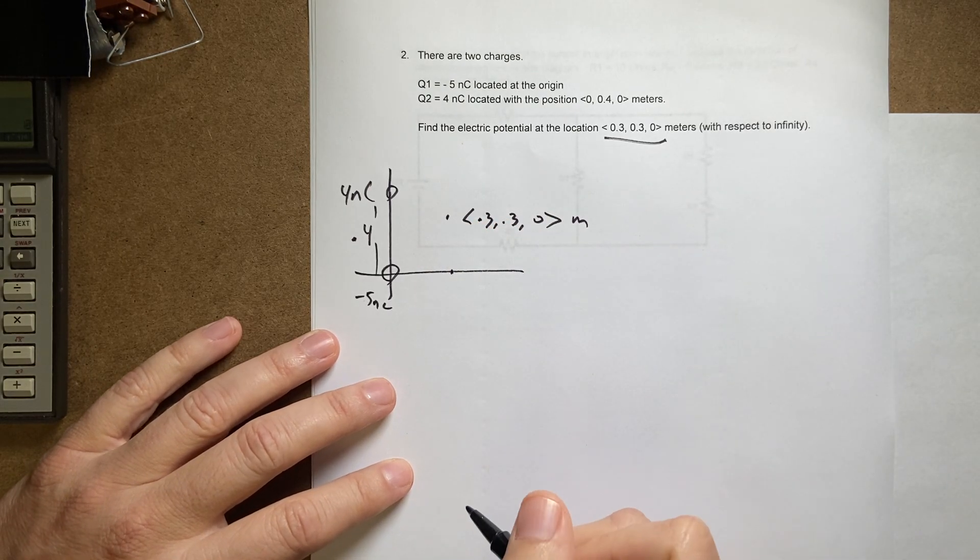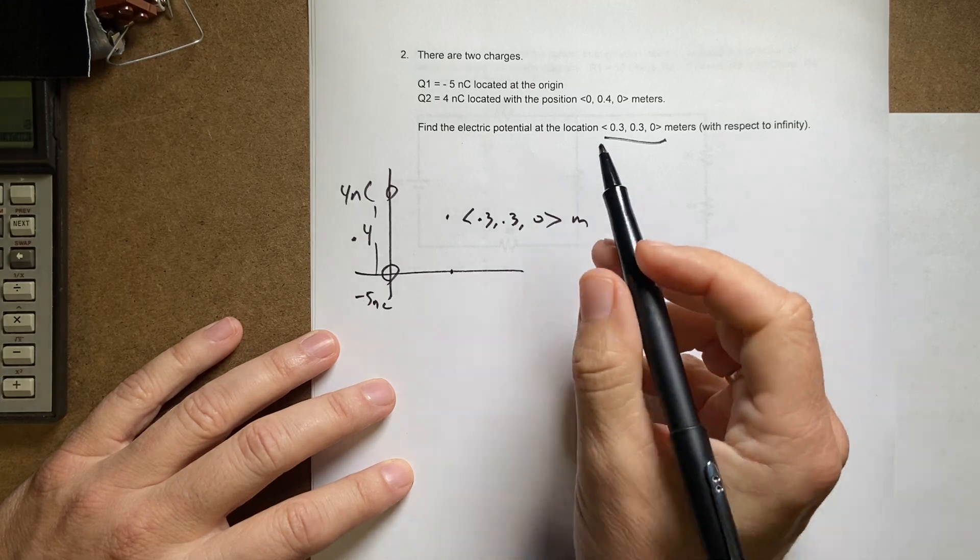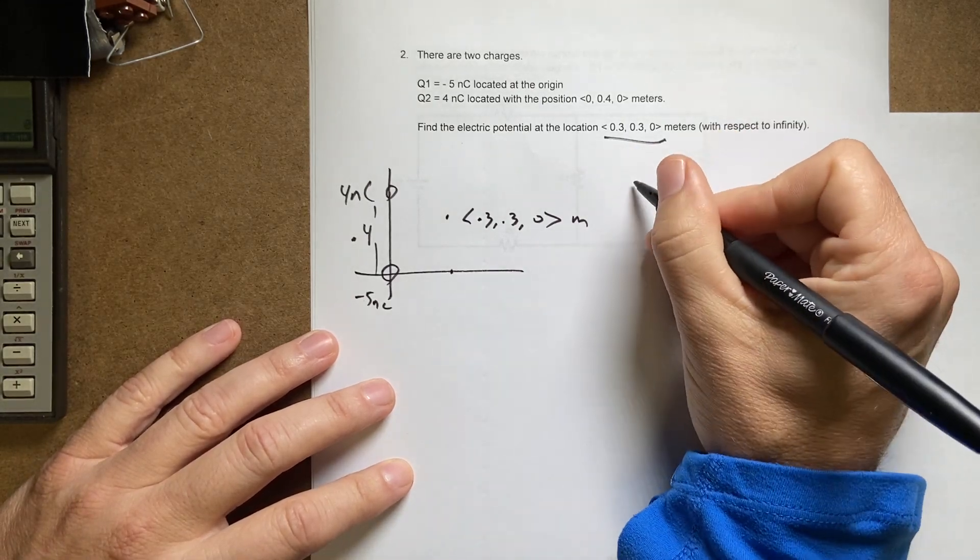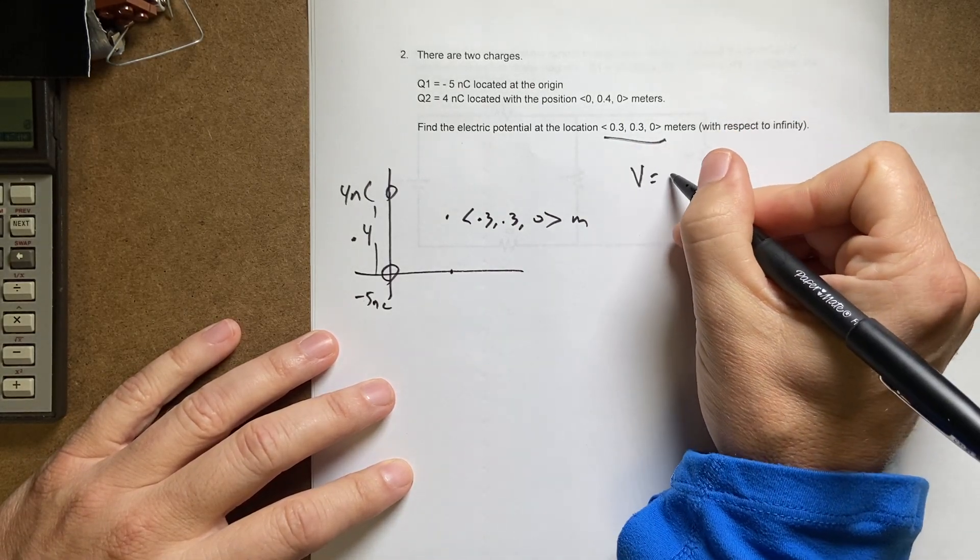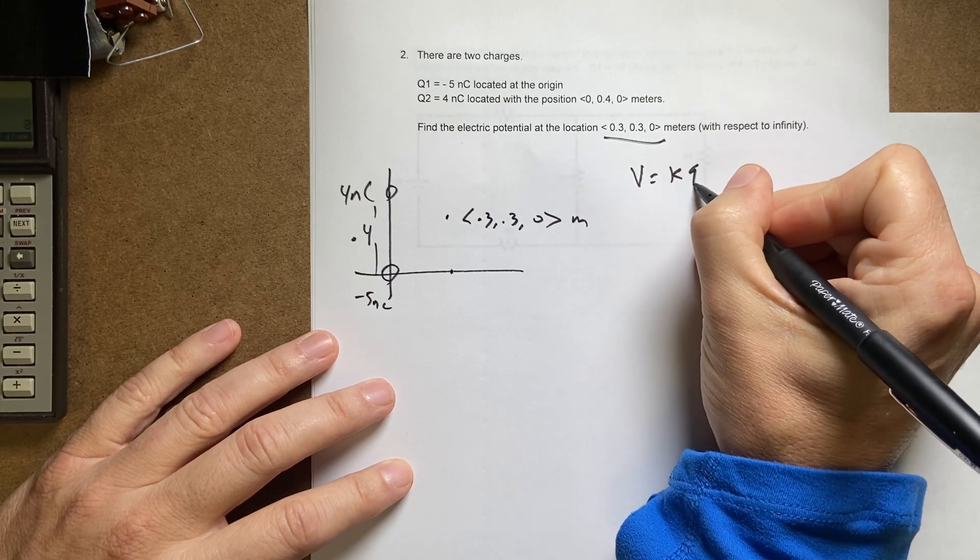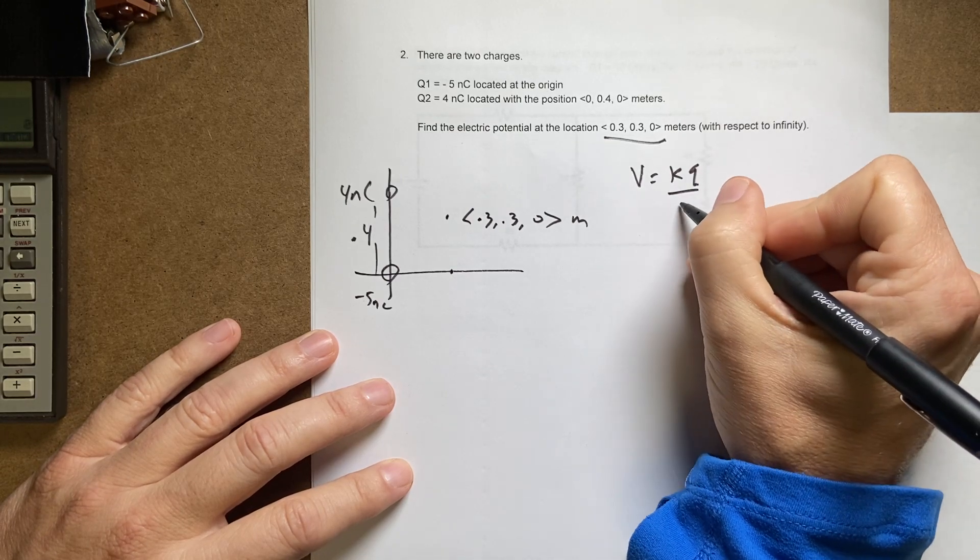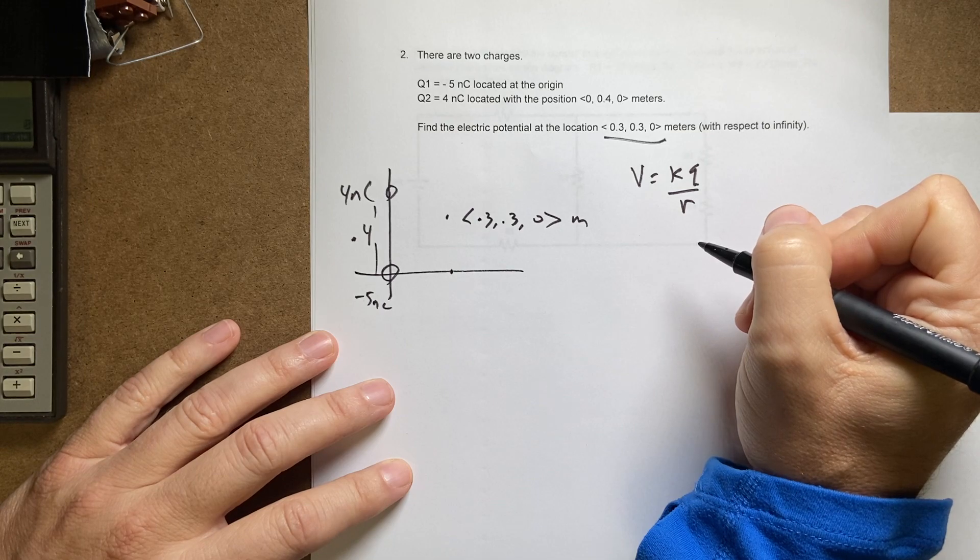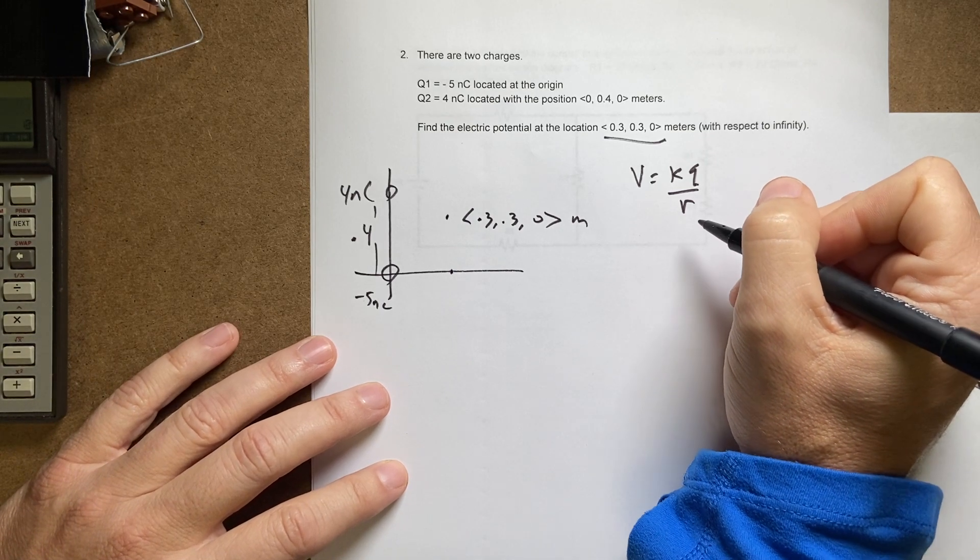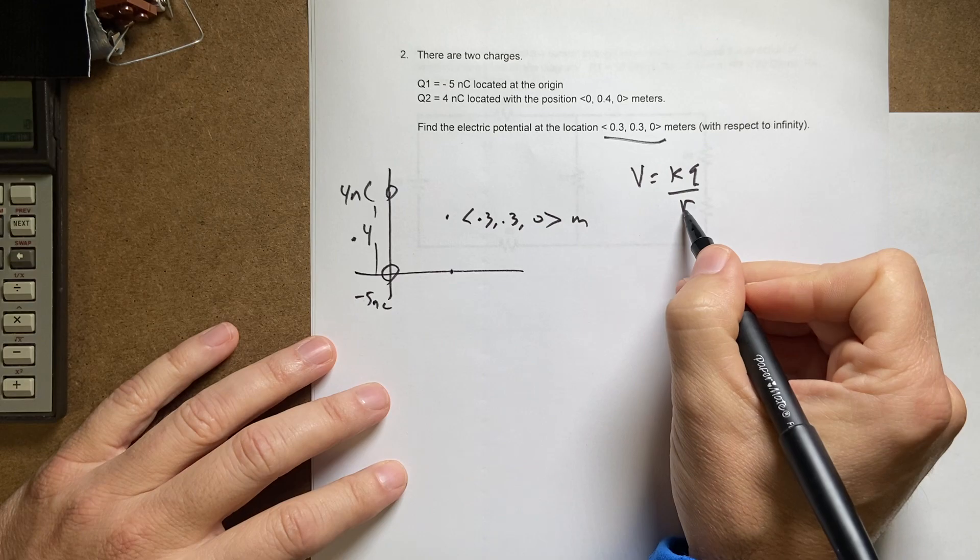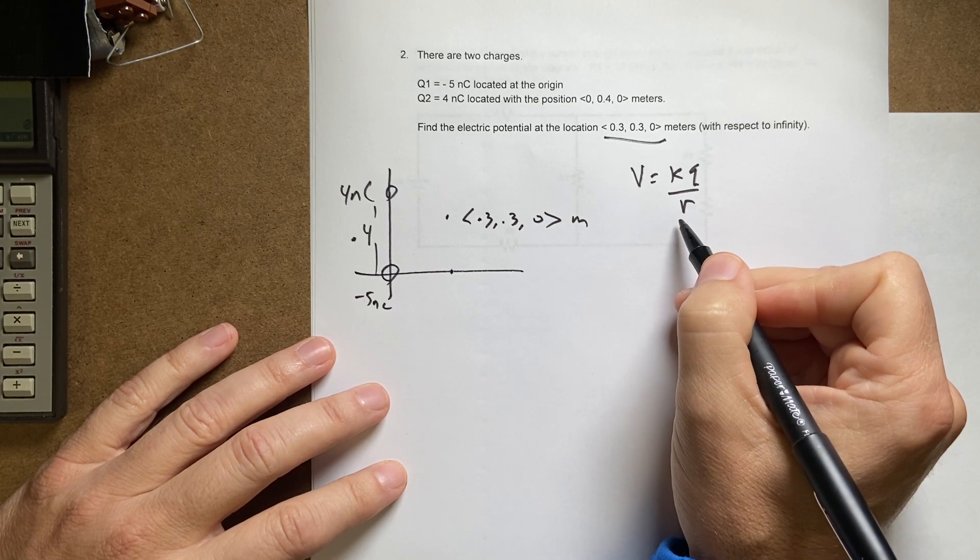So how do I find the electric potential? The potential with respect to infinity is equal to k times Q divided by R. Right, that's it. Where R is the scalar distance.